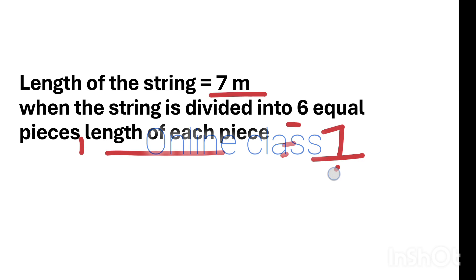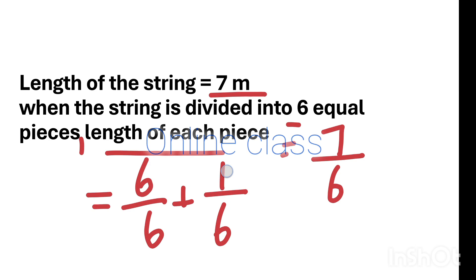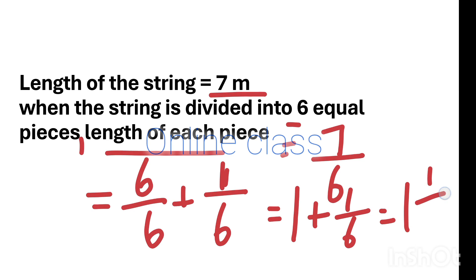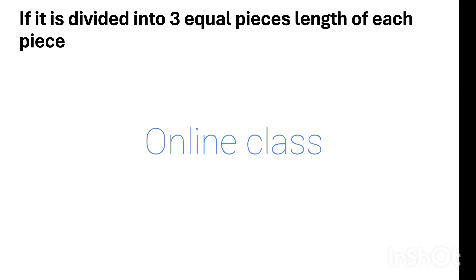Then we will do 7 by 6 to find the length of each piece when divided into 6 equal parts. For 3 equal pieces, we get 1 by 3 meter for each piece.